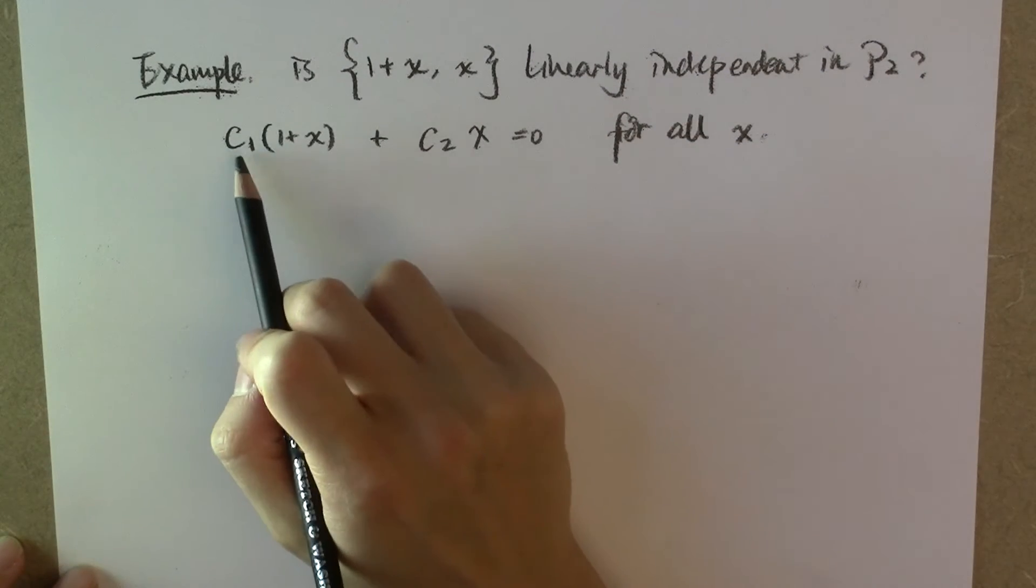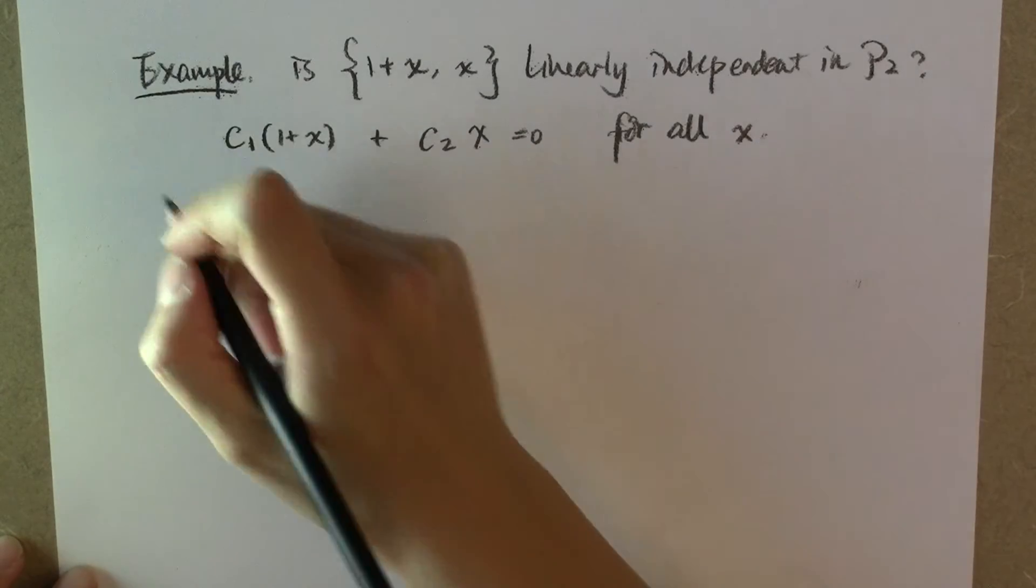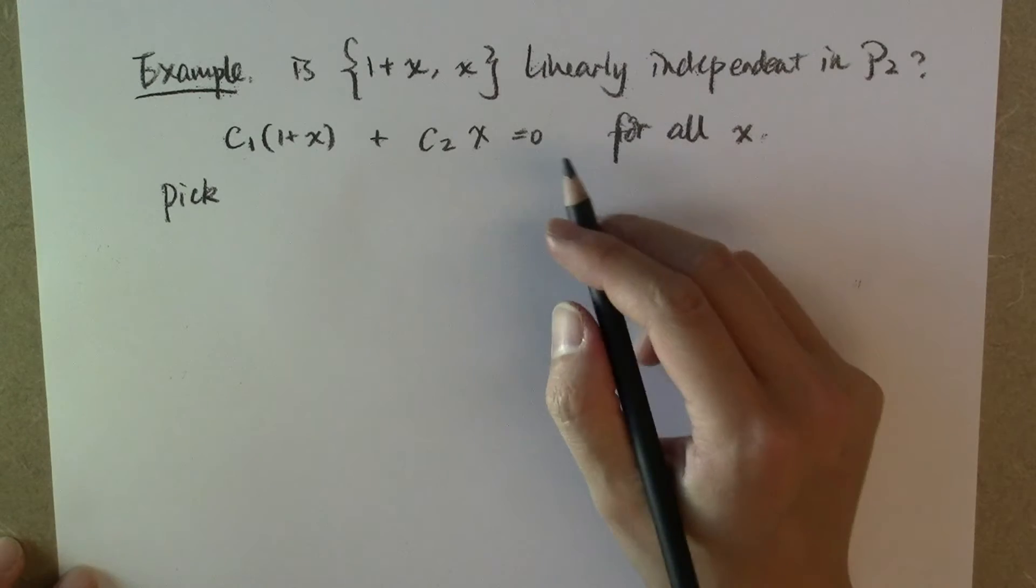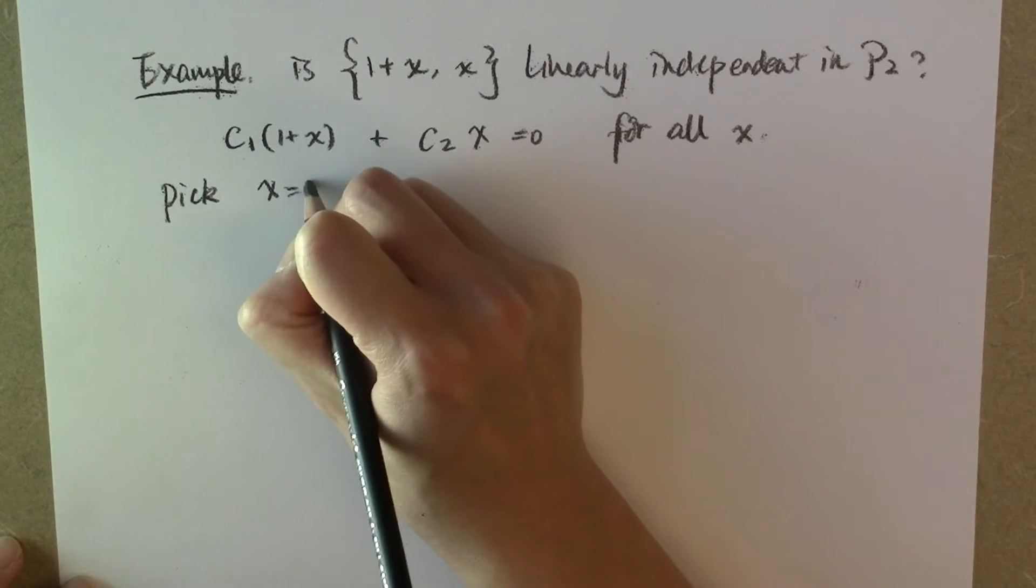Since we are requiring this to be zero for all x, then we can pick random values of x, and the left hand side will have to equal the right hand side. So let's pick x equal to zero.